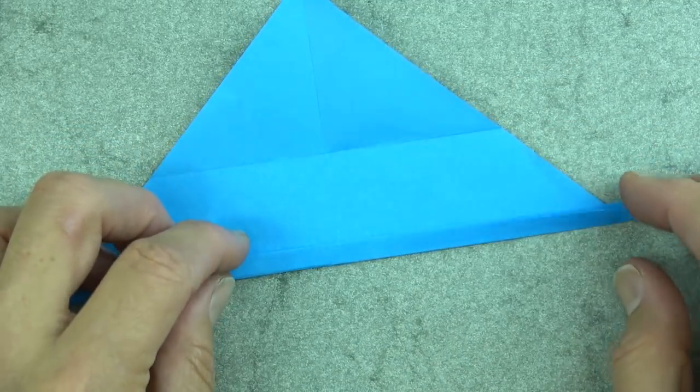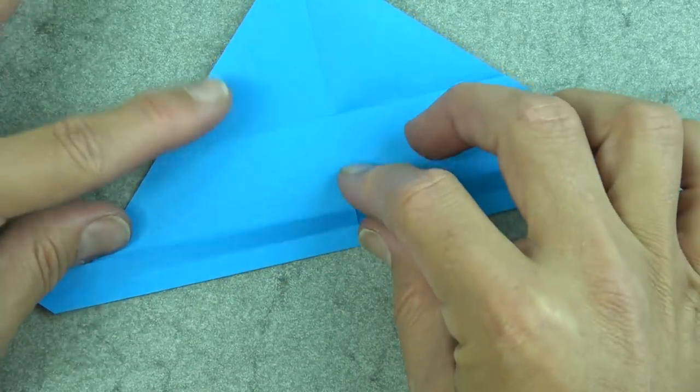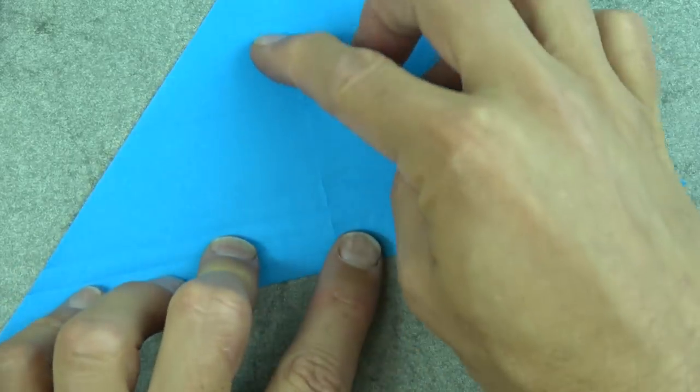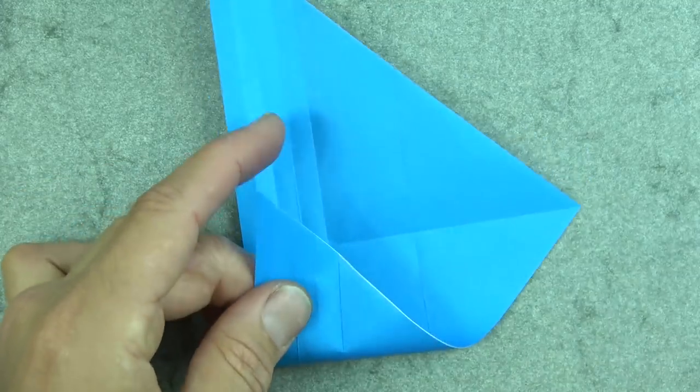Okay. Now unfold this flap and unfold this flap. So we're back to the square folded diagonally in half. Now rotate.